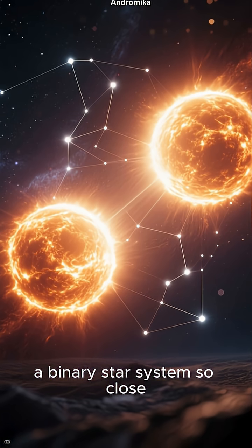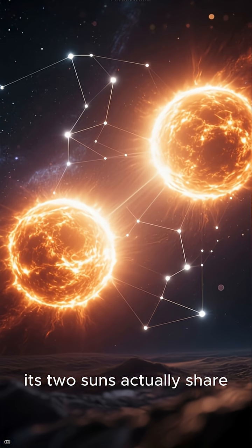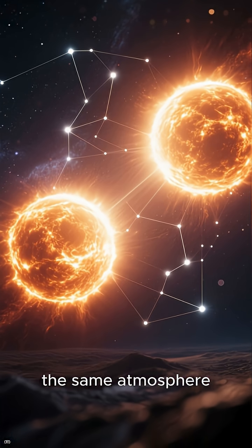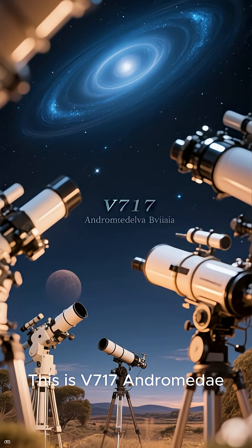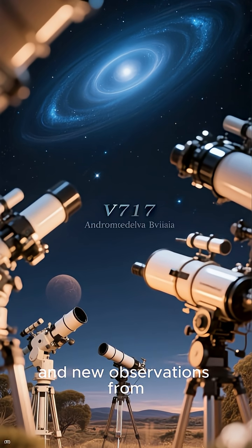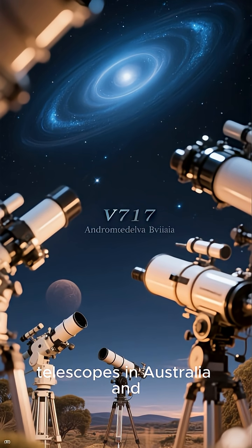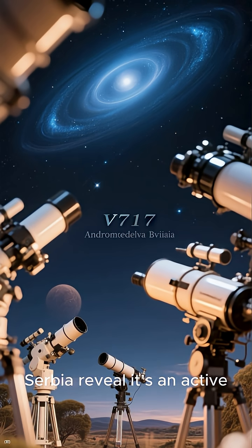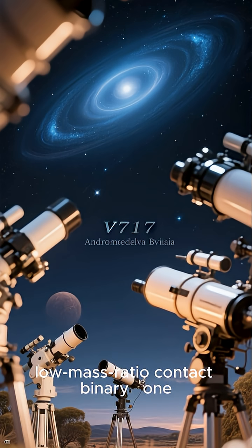A binary star system so close its two suns actually share the same atmosphere. This is V717 Andromeda, and new observations from telescopes in Australia and Serbia reveal it's an active, low-mass ratio contact binary.